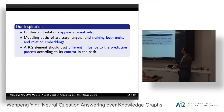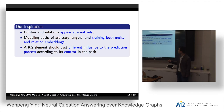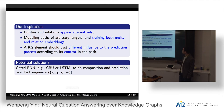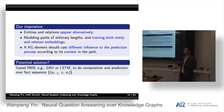Our inspiration: entities and relations appear alternatively in knowledge graph paths. And for modeling paths of arbitrary length, we hope to tune both entity and relation embeddings to give a high-quality vector space. And each knowledge graph element should cast different influence on the prediction process, given the different context in the path.